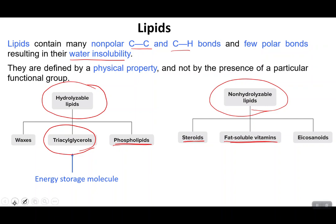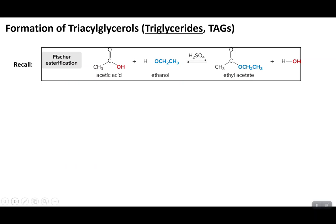So let's talk triacylglycerols. In order to understand how triglycerides are formed, we need to revisit our Fischer esterification reaction. Recall that in a Fischer esterification, we reacted a carboxylic acid with an alcohol — in this case, ethanol. The OH was removed, the hydrogen from the alcohol was removed, and then the oxygen formed a bond with the carbonyl carbon, producing what we call an ester. We also formed water as a byproduct, because the OH and the H come together to form water.